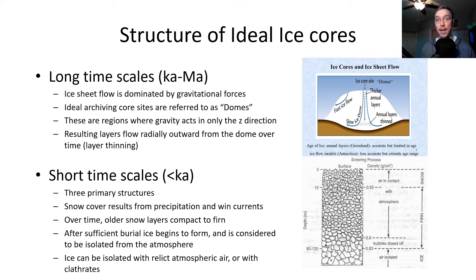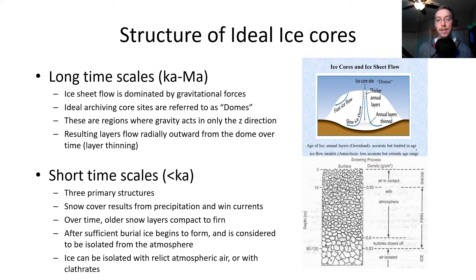For short time scales, there are three primary structures. Snow cover results from precipitation and wind currents. Over time, older snow layers compact to form firn — which is compressed snow. After sufficient burial, ice begins to form due to compression: as there's more weight above, it will warm, compress, and form ice. At that point it's considered isolated from the atmosphere, and ice can be isolated with relic atmospheric air, called clathrates, within it.